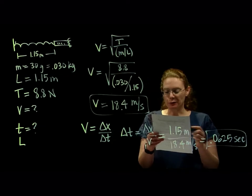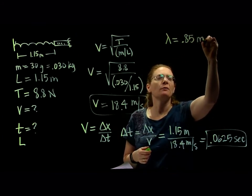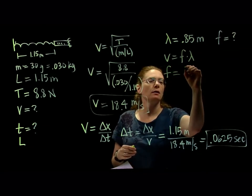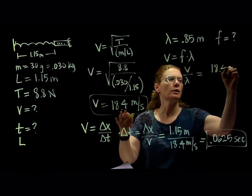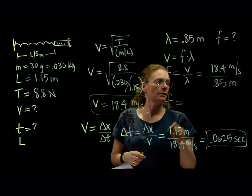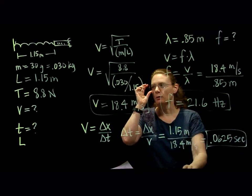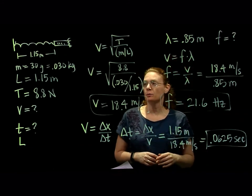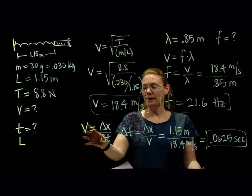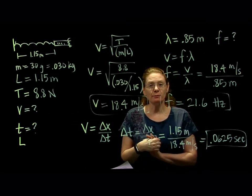The last question: if you set up a wave with a wavelength of 0.85 meters, what is the frequency? Using the basic wave equation, velocity equals frequency times wavelength, we rewrite it as frequency equals velocity over wavelength: 18.4 divided by 0.85 gives 21.6 hertz. So there are just two quick problems on waves on a string. We used the wave-on-a-string equation to relate tension and linear density to wave speed, and used the definition of velocity to find travel time. Hope that's making sense — good job!